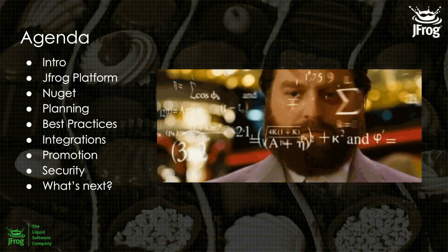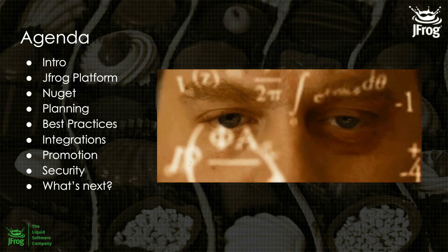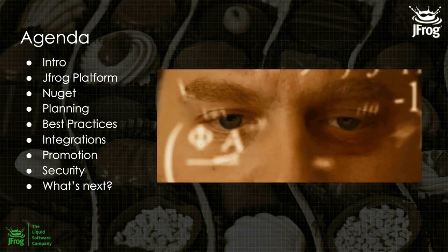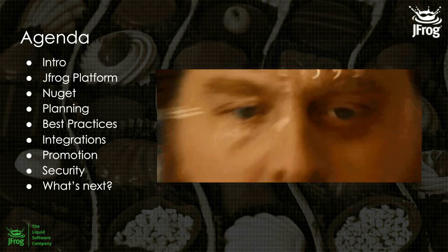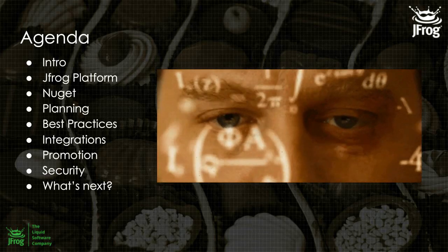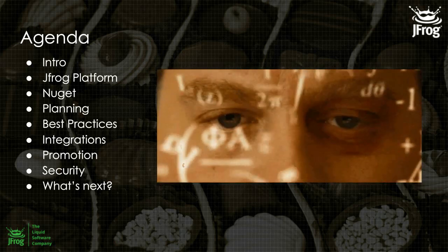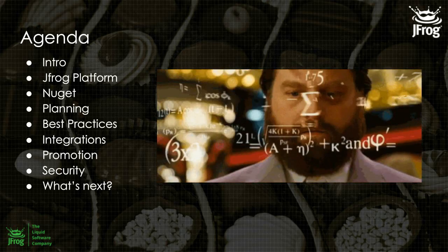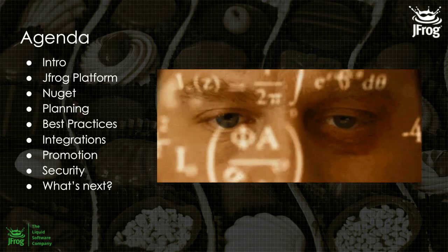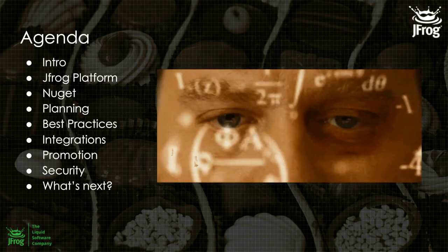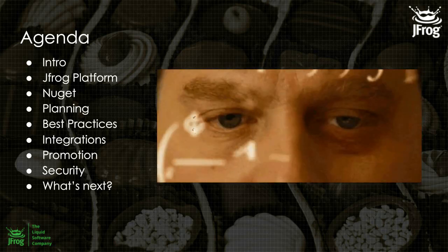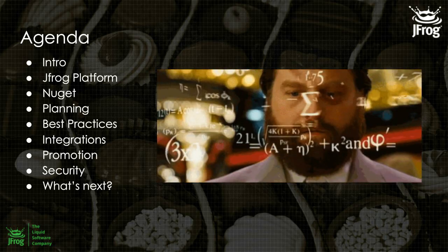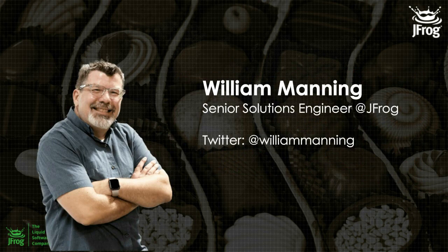We'll talk about NuGet in general, planning, how to utilize Artifactory for various methods — everything from the initial idea of ingesting binaries, third-party NuGet packages, to producing packages. We'll cover better ways to produce builds, put them into Artifactory, and use our promotion API to promote atomic units through your system. We'll also touch on security and next steps at the end.